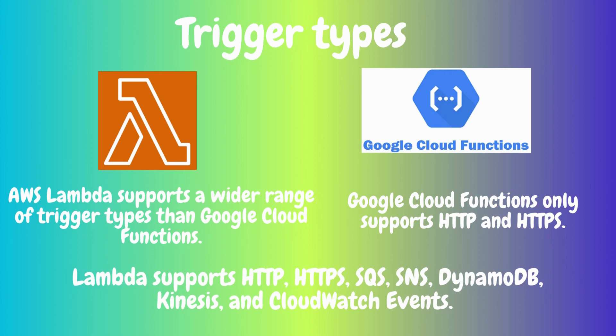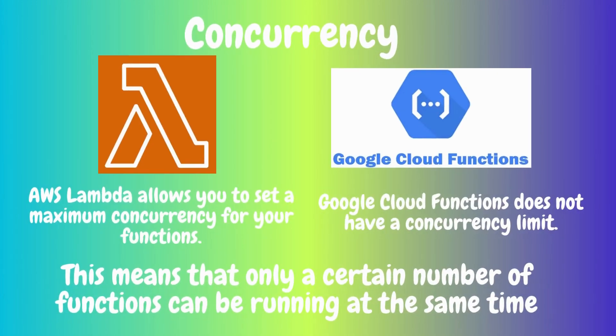Concurrency: AWS Lambda allows you to set a maximum concurrency for your functions, meaning only a certain number of functions can run at the same time. Google Cloud Functions does not have a concurrency limit. Setting a maximum concurrency can help you control the cost of your Lambda functions.